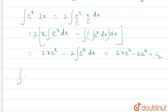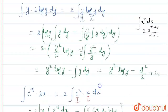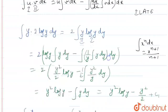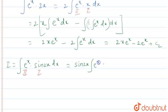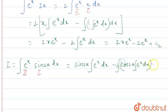Now for the integral of e^x sin 2x, we have trigonometric and exponential. Exponential comes after trigonometric in ILATE, so sin 2x is the first function and e^x is the second. Consider this integral to be I. We write: sin 2x times integral of e^x, minus the derivative of sin 2x which is cos 2x times 2, multiplied by the integral of e^x. So I equals e^x sin 2x minus 2 times the integral of e^x cos 2x.